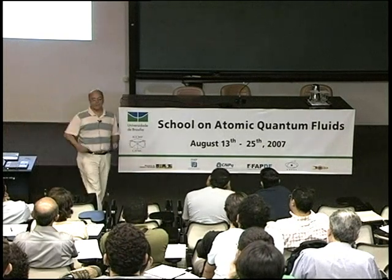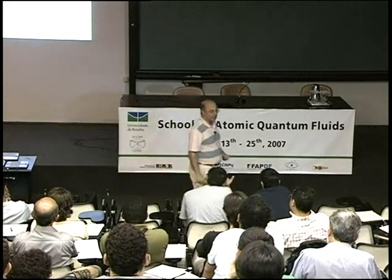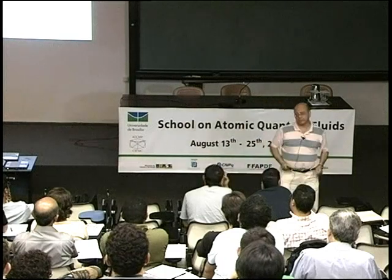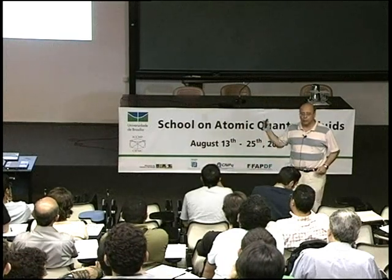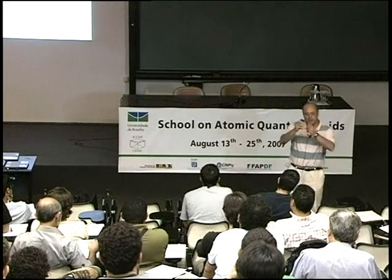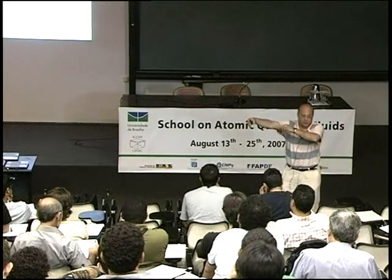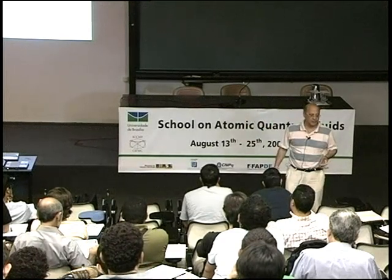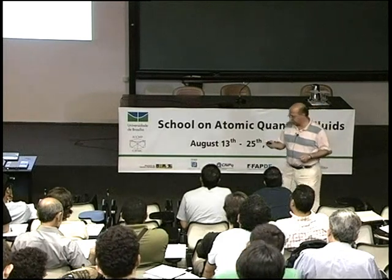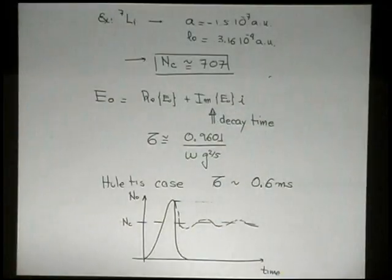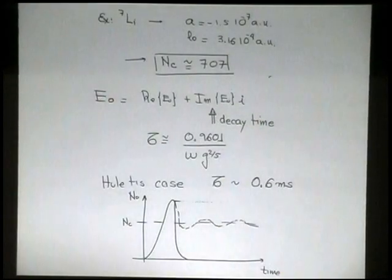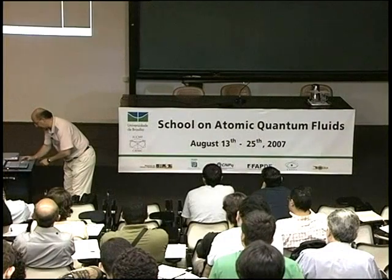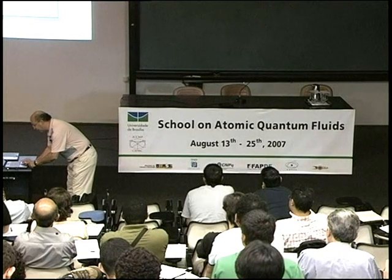So negative scattering length is a problem. Maybe it's good to make molecules. But it's not good for having a condensate. Maybe you make a molecule and the molecule will stay there, because molecule to molecule will have a positive kind of interaction. But if you have a negative. So this is basically, it's not the end. Don't get happy yet.